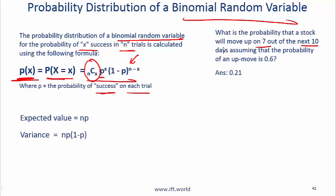The stock could go up on any seven days. It could be the first seven, the last seven, the middle seven or whatever. If the probability of up move is 0.6 then P is 0.6. The other scenario is failure, which is 1 minus 0.6 probability, so it would be 0.4. Remember this formula.